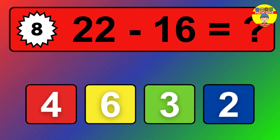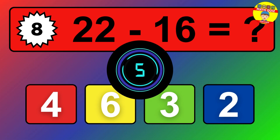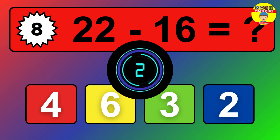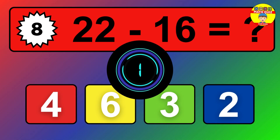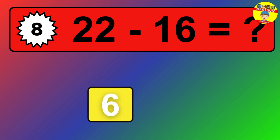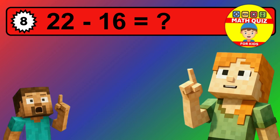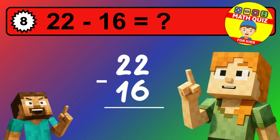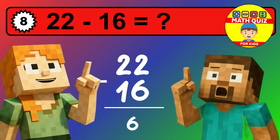We start with the units. 2 minus 5 is not possible, so we need to regroup. We take one 10 from the tens column. Now we have two tens, and the units become 12. Now we subtract. 12 minus 5 is 7. Then we go to the tens. 2 minus 1 is 1. The final answer is 17.